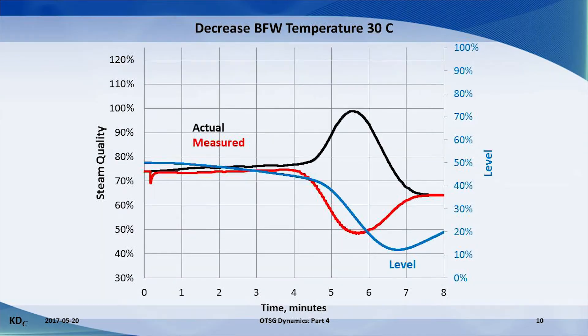The trend of the actual and measured steam quality shows the opposite patterns that were observed with the increase in boiler feed water temperature. The actual quality spikes high because there is insufficient water exiting the OTSG to keep it cool. A trip on superheat may occur. But the measured venturi quality dips low because of the low mass flow rate through the venturi, resulting in a low pressure drop.